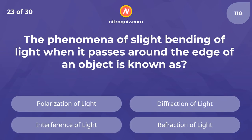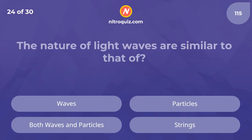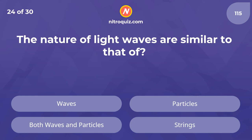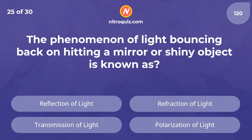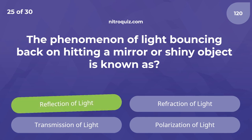The phenomenon of slight bending of light when it passes around the edges of an object is known as — the answer is diffraction of light. The nature of light waves are similar to that of — the phenomenon of light bouncing back on hitting a mirror or a shiny object is known as — the answer is reflection of light.